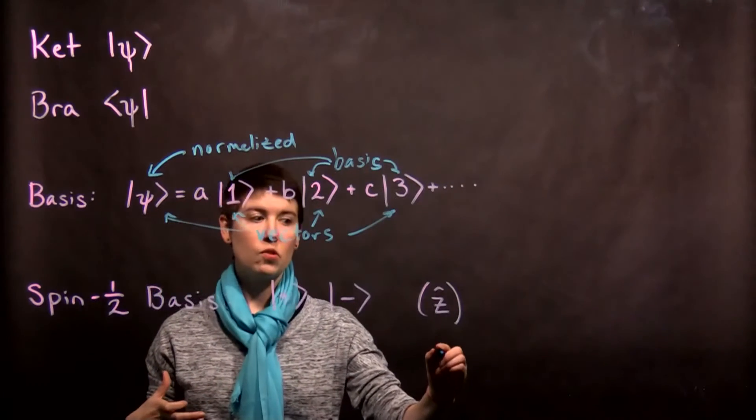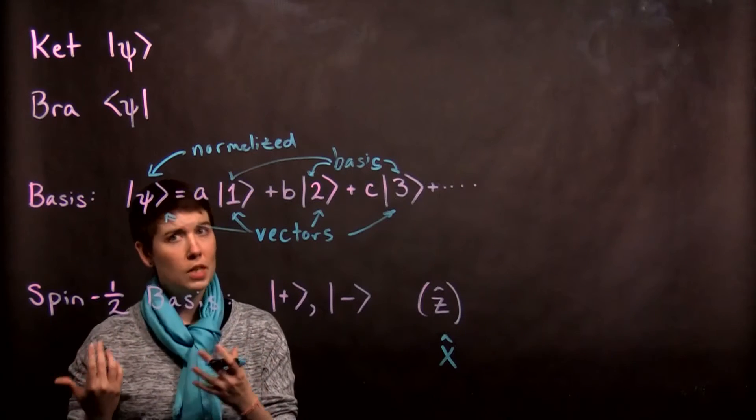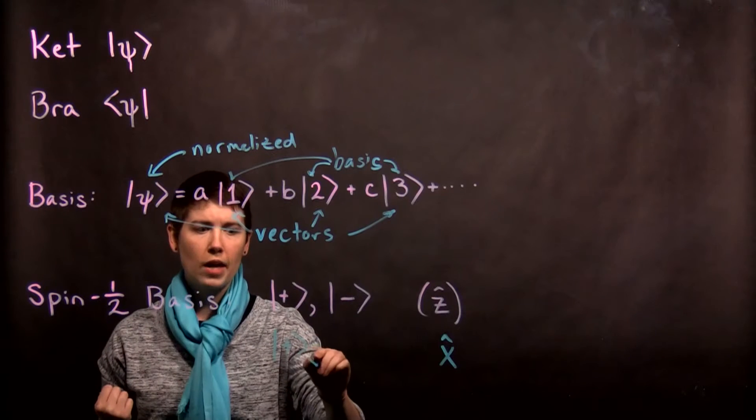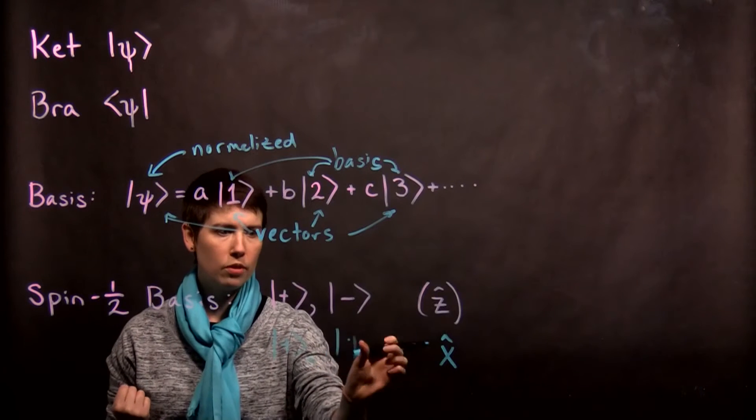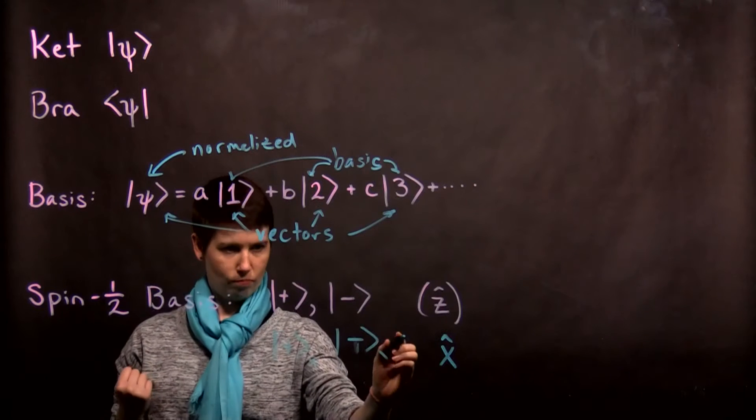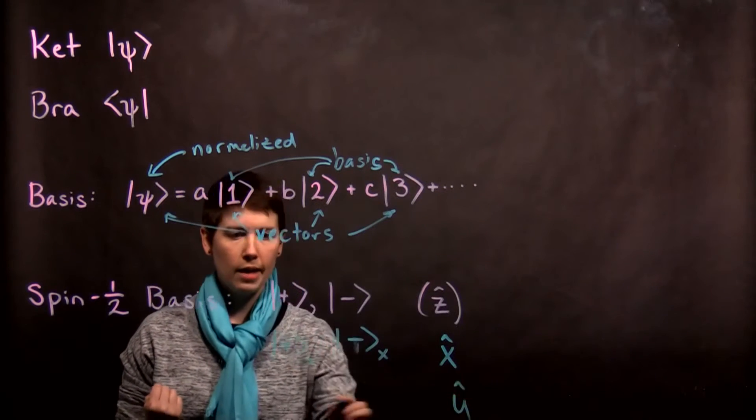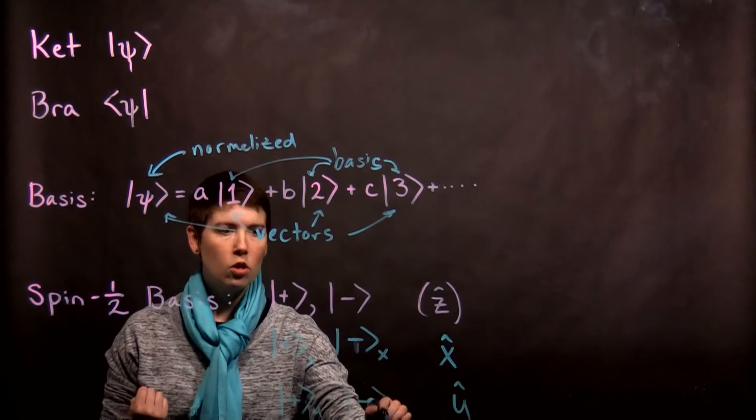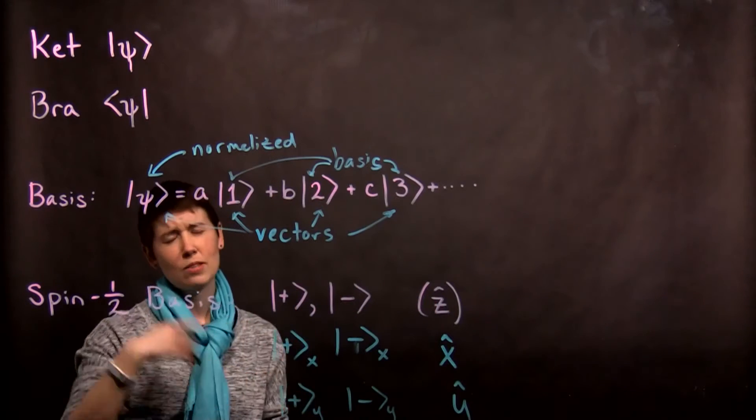But the same vector space can be spanned by other vectors. So we can think about this instead as the x direction. And again, you can have a spin up in x, spin down in x. And what we do to denote that that's the x basis is we put these x subscripts on that. And then when we have a y, we again have our subscripts. So you don't necessarily need to put the z subscripts. That's kind of implied.